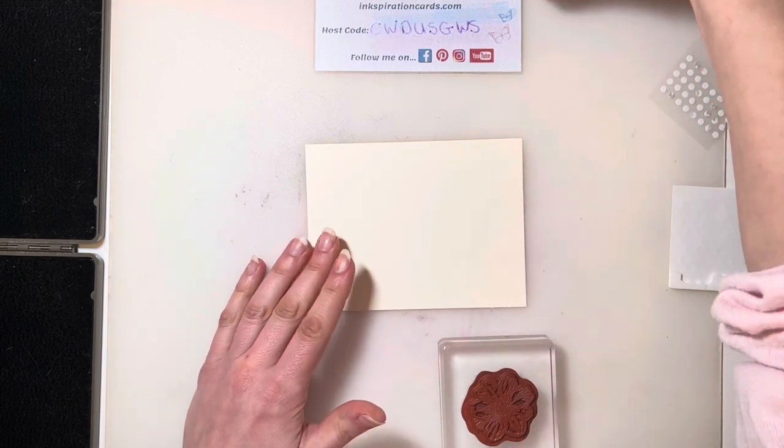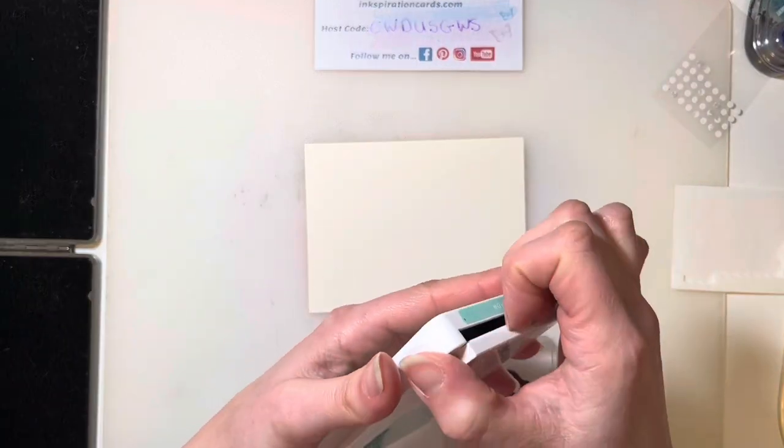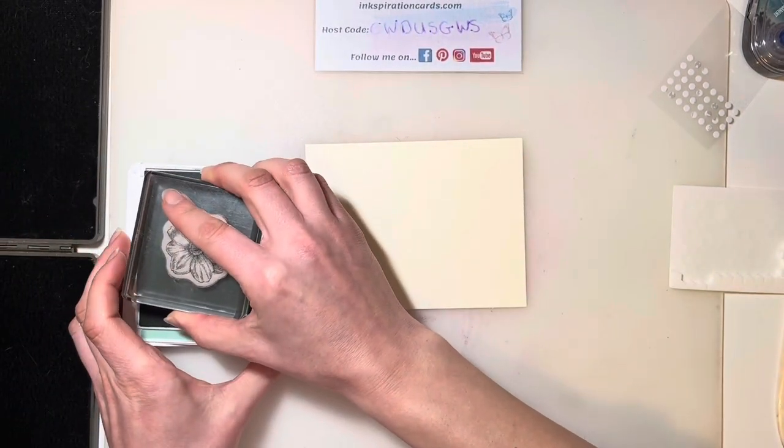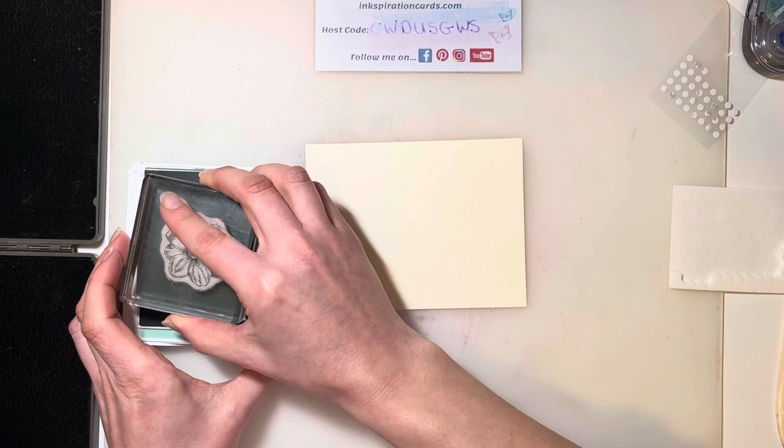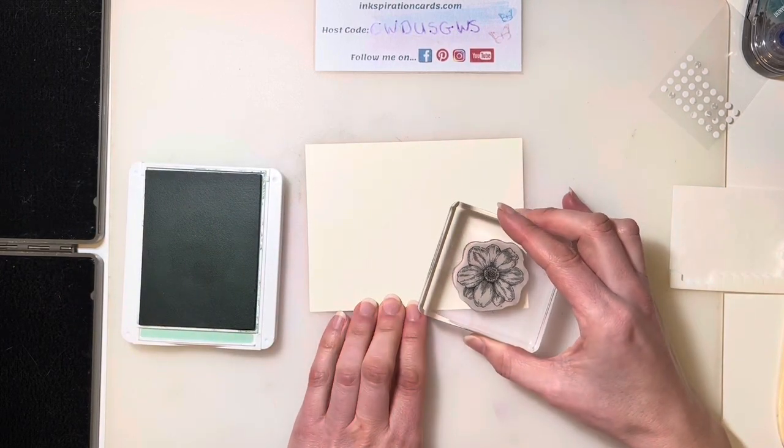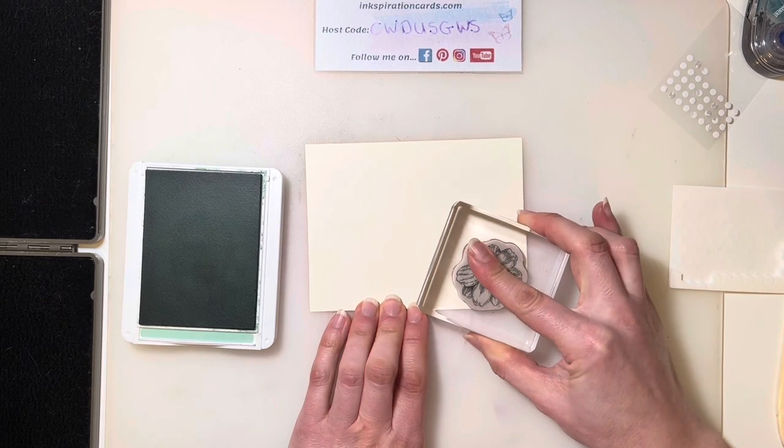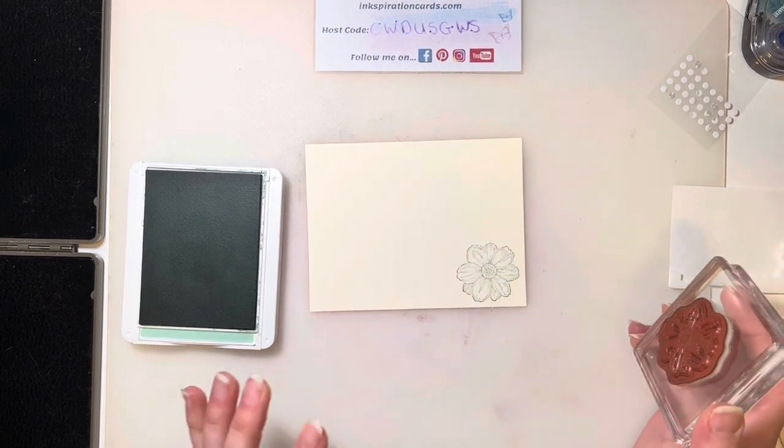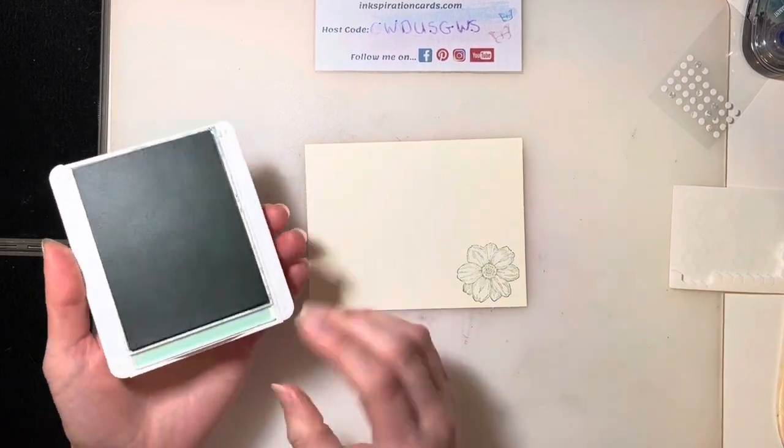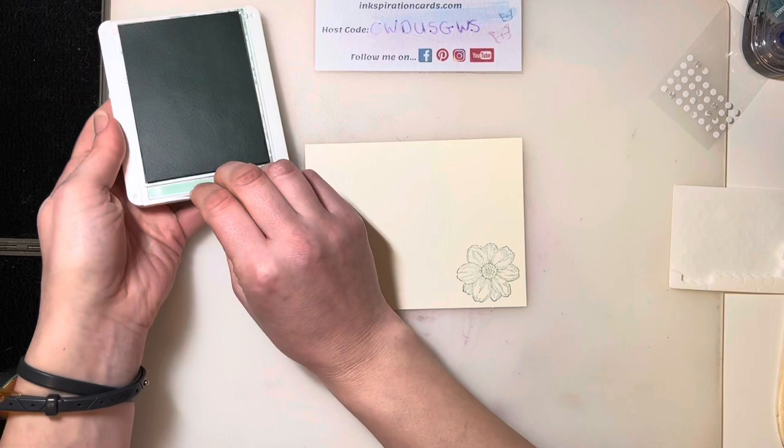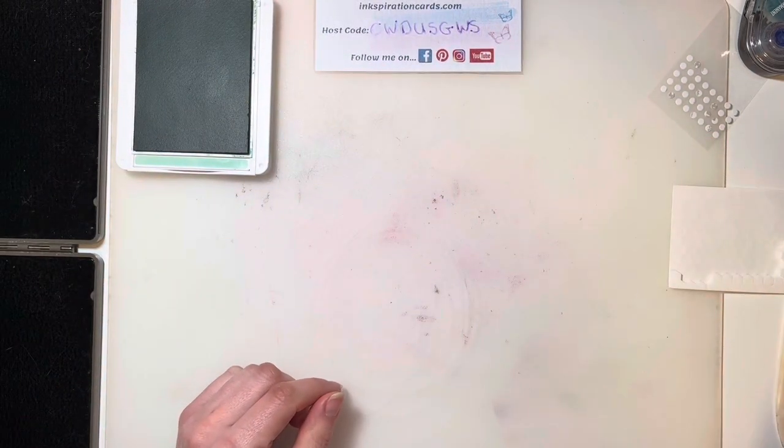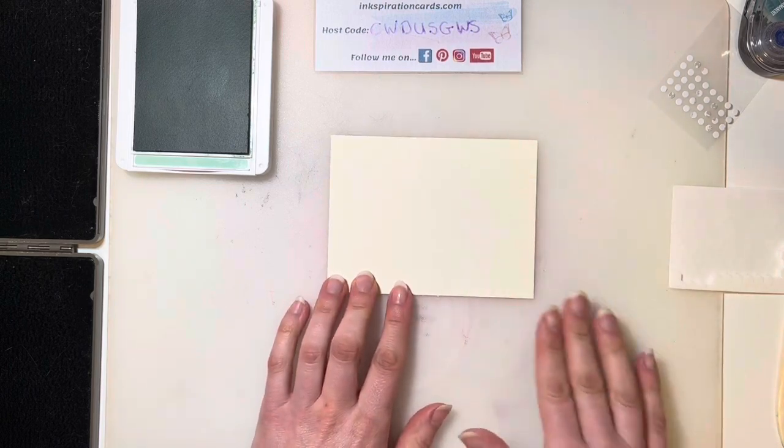And on the inside, because I want to bring some of the mint macaron from the outside to the inside of the card, I always like to bring in one of the other colors so that both colors are reflected on the inside and the outside of the card. All right, so there we've got that piece there. So let's set that aside to dry.